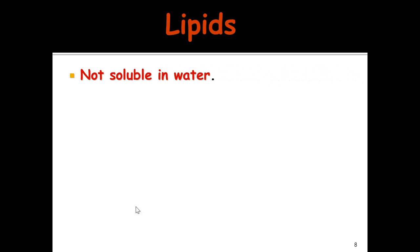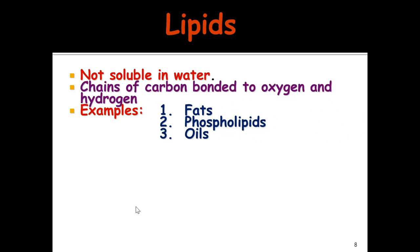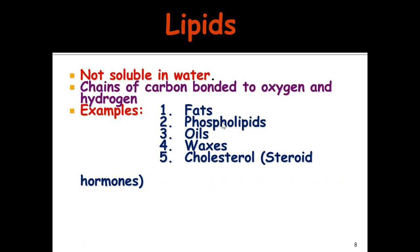The next type of macromolecule are lipids. Lipids are not soluble in water — they don't mix with water well. Oil doesn't mix with water, and oil is a lipid. They're chains of carbon bonded to oxygen and hydrogen. Examples include fats, oils, the phospholipid bilayer which has lipid tails, waxes — even the wax in your ears — cholesterol, steroid hormones, and triglycerides.